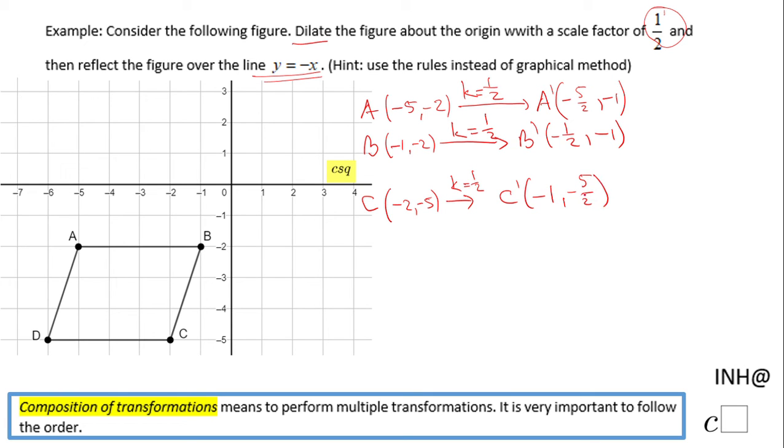The last point, point D, which has the coordinates negative six and negative five, under this dilation of scale factor of one-half centered at the origin, becomes D prime, which is going to be negative six times one-half, that is negative three, and negative five times one-half, negative five halves. So this is the dilation.